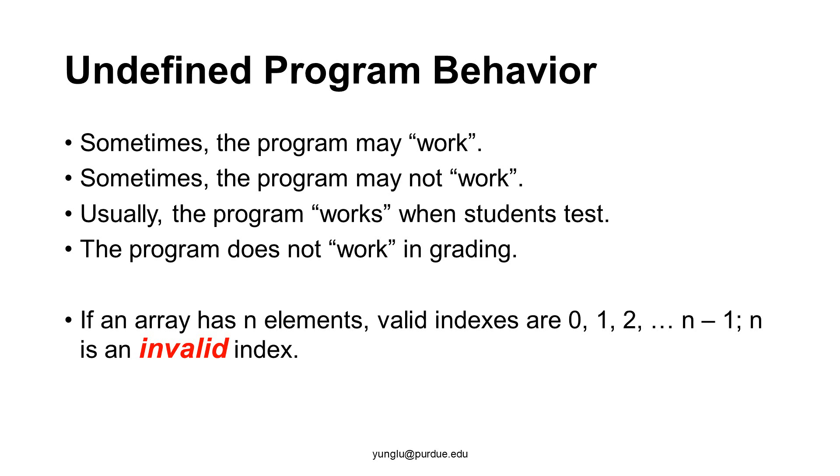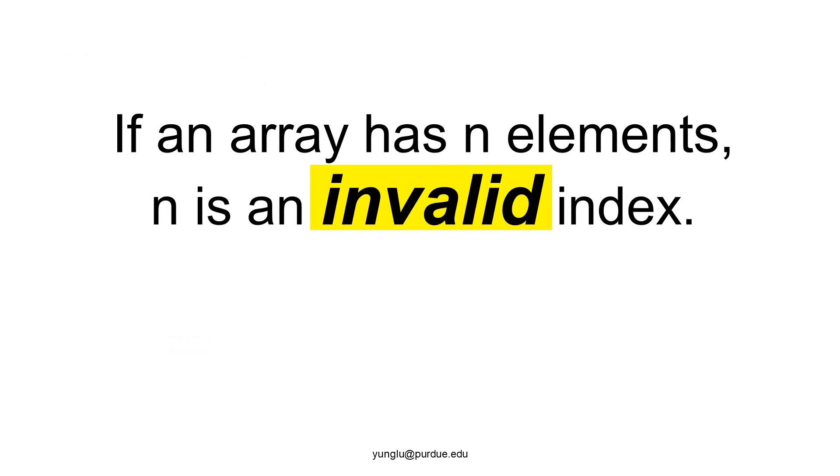If an array has n elements, valid indexes are 0, 1, 2. The largest index is n minus 1. n is an invalid index. This is a fact. Let me emphasize it again. If an array has n elements, n is an invalid index.